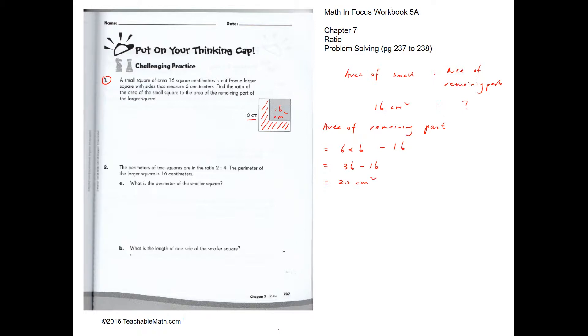Therefore, the ratio would be the small square, 16, to the area of the remaining part, 20. And this is reduced by dividing by 4, giving us 4 is to 5.